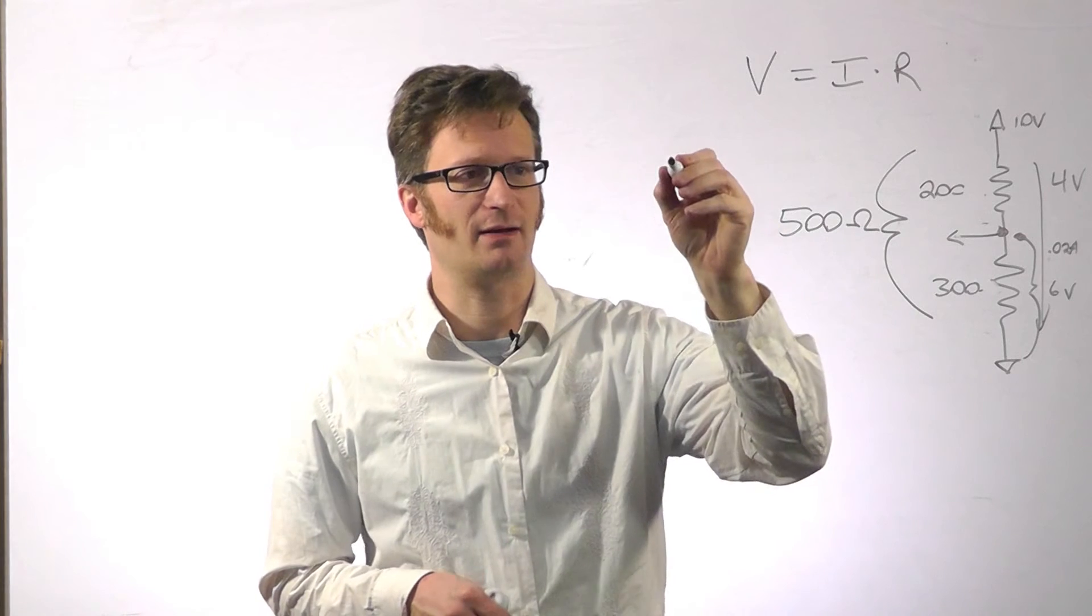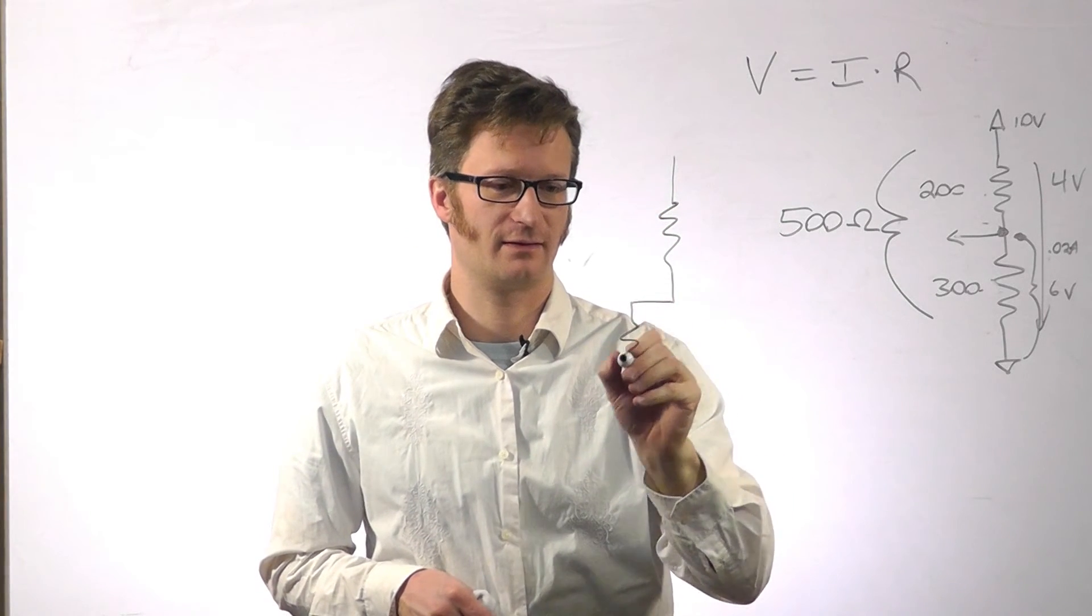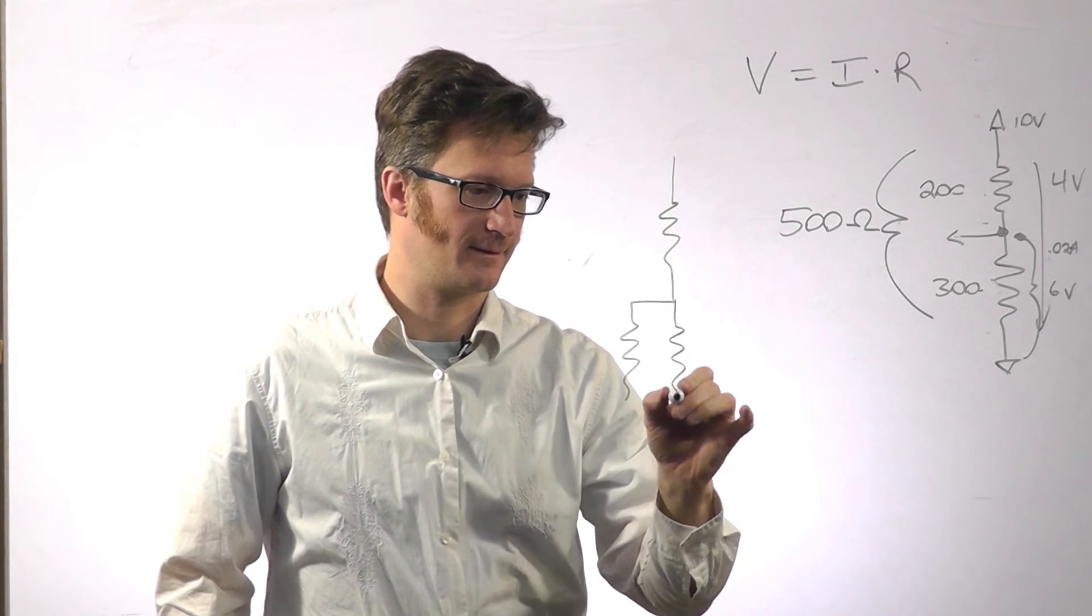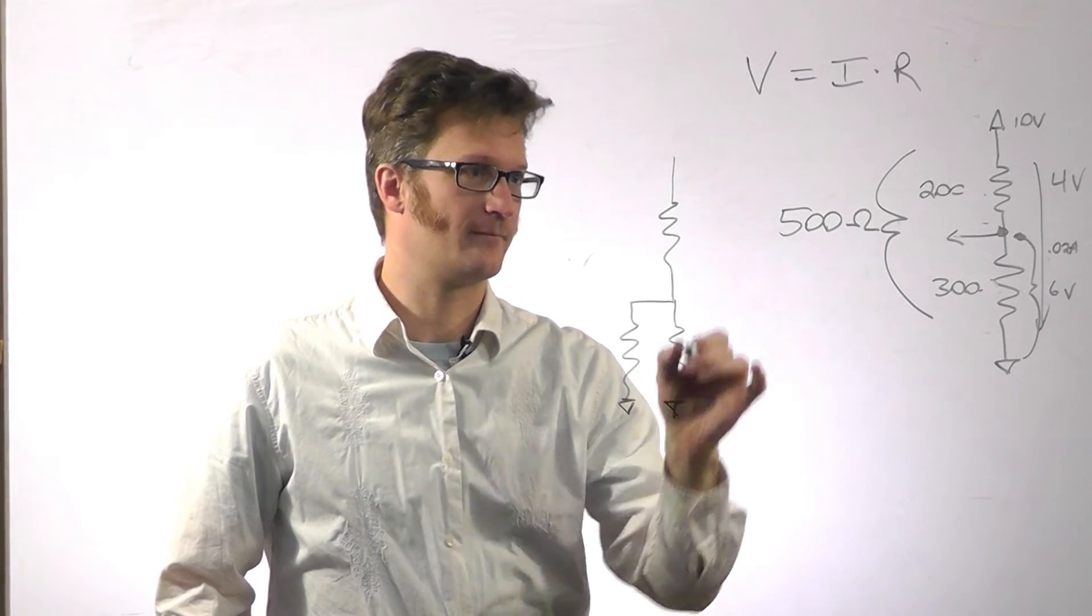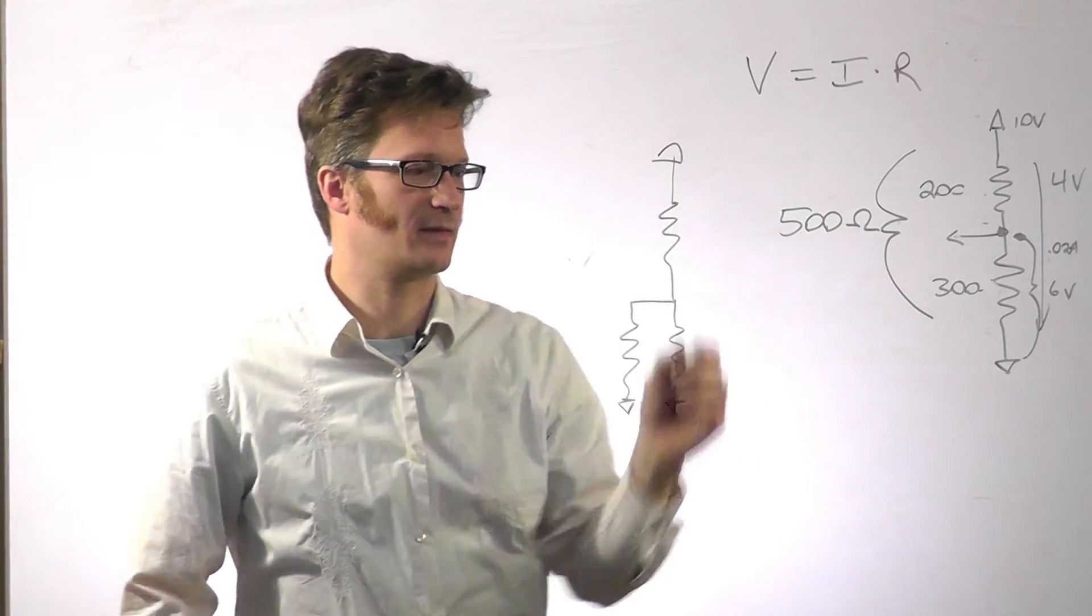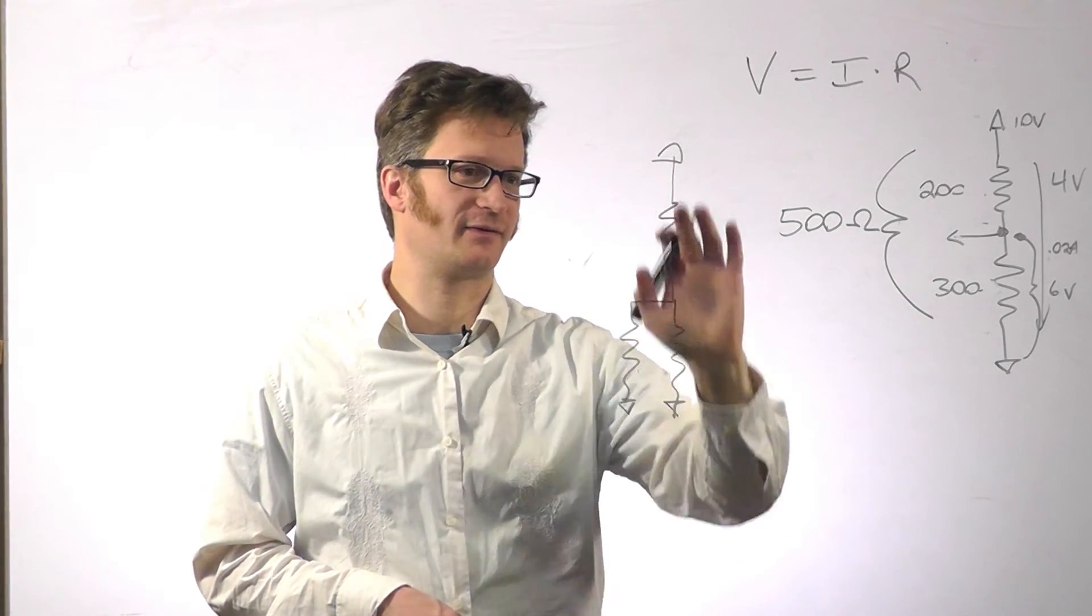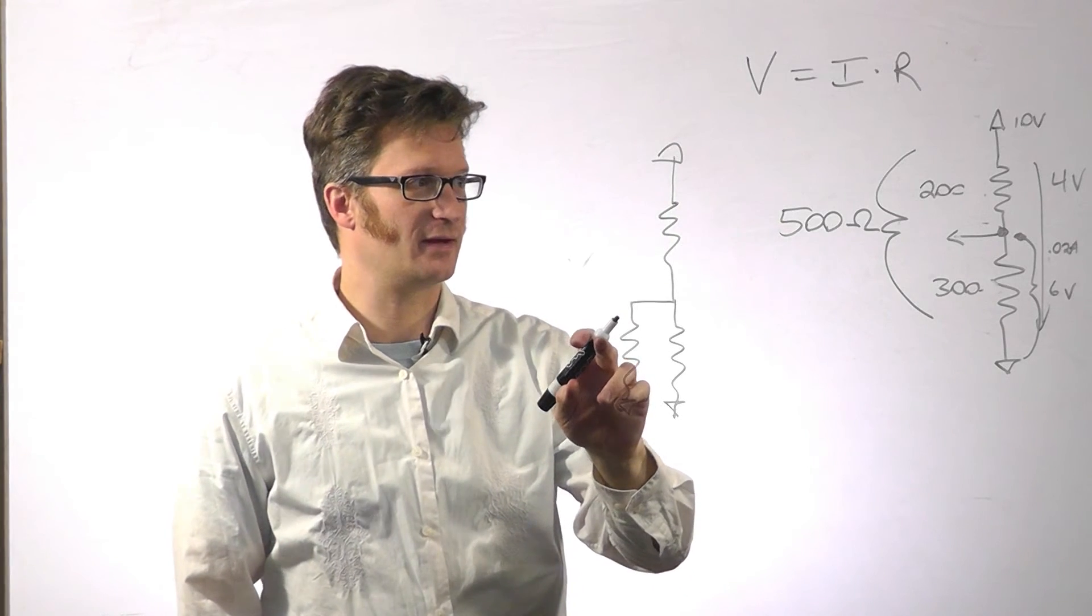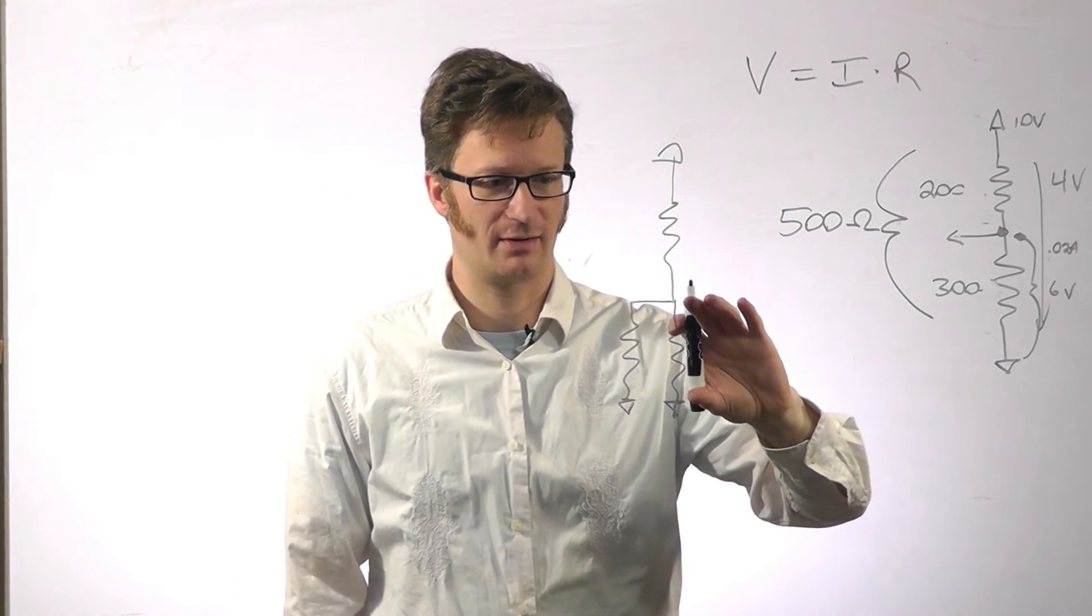And that would end up looking something like this, where this is your load resistor right here. So if before we had 6 volts across here, if we add a load to this, then our voltage will actually drop across here.